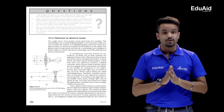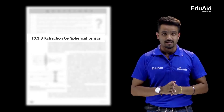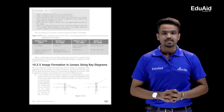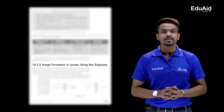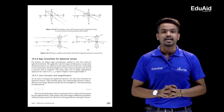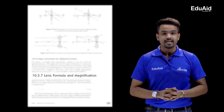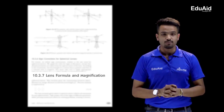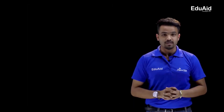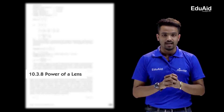Topic 10.3.3 is about the study of refraction using spherical lenses. Topics 10.3.4 and 10.3.5 are about image formation by lenses using ray diagrams. Topic 10.3.6 is about the sign convention for lenses, and 10.3.7 is about the lens formula and magnification. The last part of this chapter is topic 10.3.8, which is about the power of the lens.